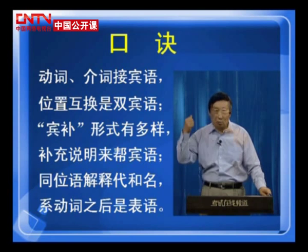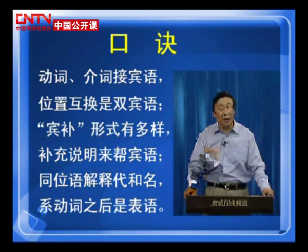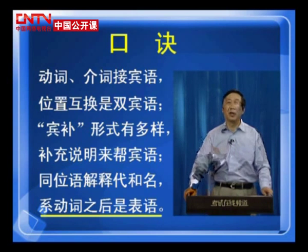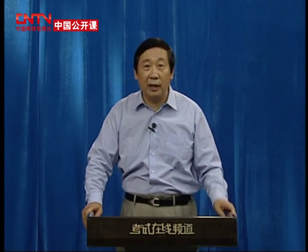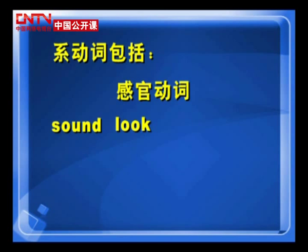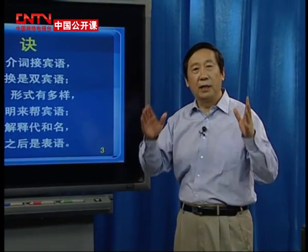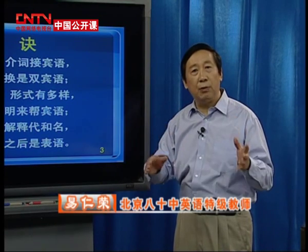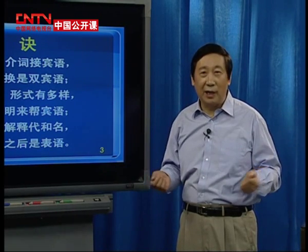中文也有同位语，比如：我们新中国的青少年要努力学习，'新中国的青少年'就是同位语。最后一句话：系动词之后是表语。系动词最常见的是be动词，除此之外还有感官动词：sound、look、taste、smell，以及remain、stay等词。通过这个口诀，我们就可以清楚地了解宾语、宾补、双宾语、同位语、表语这些概念。